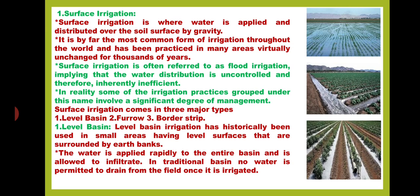Surface irrigation is where water is applied and distributed over the soil surface by gravity. It is by far the most common form of irrigation throughout the world and has been practiced in many areas virtually unchanged for thousands of years. Surface irrigation is often referred to as flood irrigation, implying that the water distribution is uncontrolled and therefore inherently inefficient.